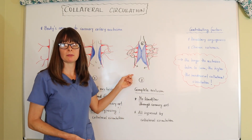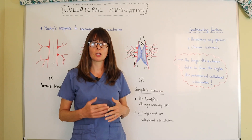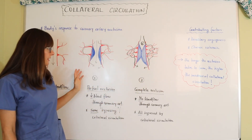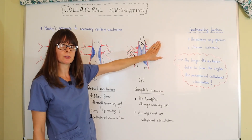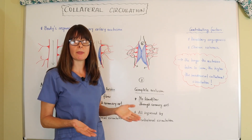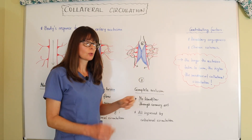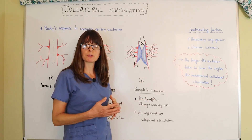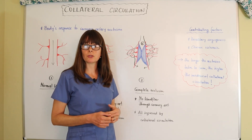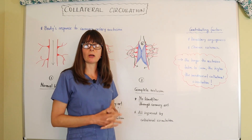This is also why younger patients can have poorer outcomes with a heart attack. They have not had this chronic ischemia or chronic partial occlusion slowly progressing, so they don't have collateral circulation developed. That's when you hear of a 40 or 50 year old having a heart attack and dying suddenly, because their body has not had time to develop this network of arteries. Collateral circulation is more commonly seen in older patients and in those with chronic conditions that are risk factors for coronary artery disease, such as diabetes, hyperlipidemia, and hypertension.